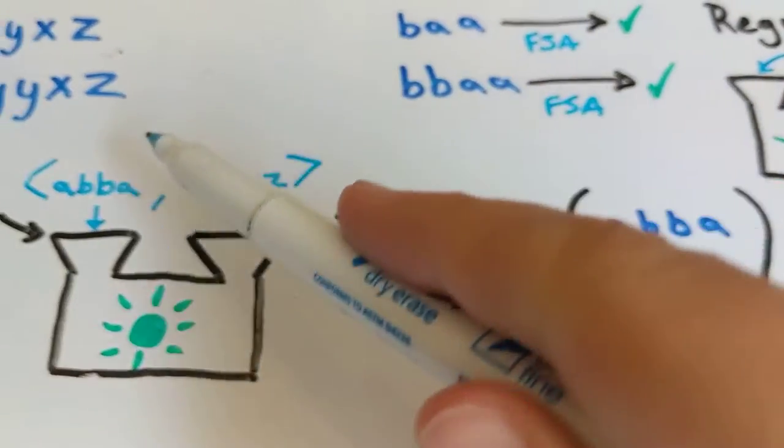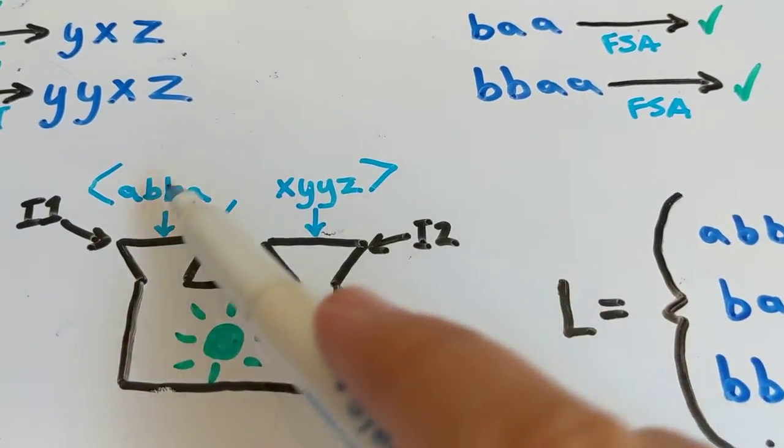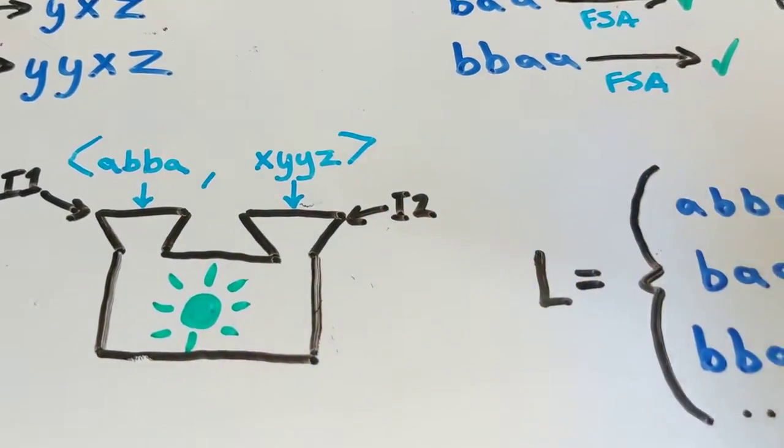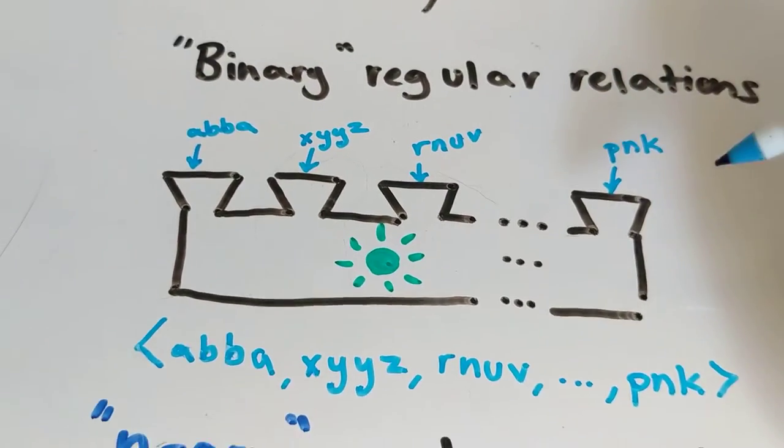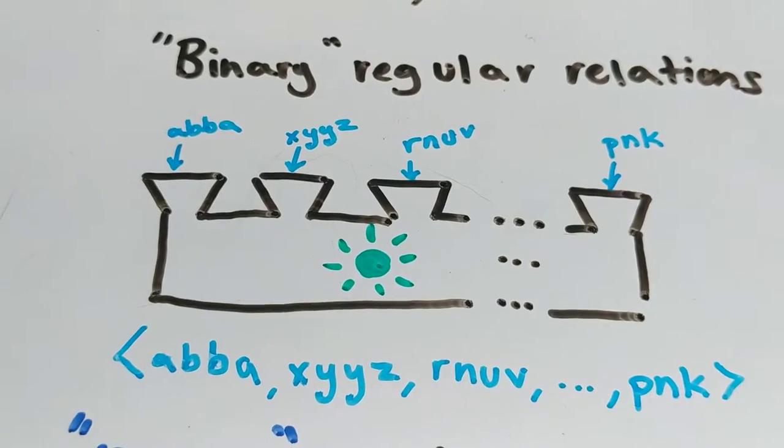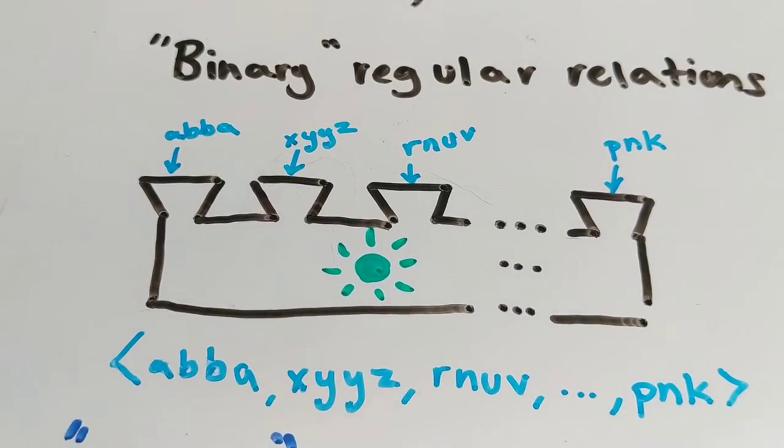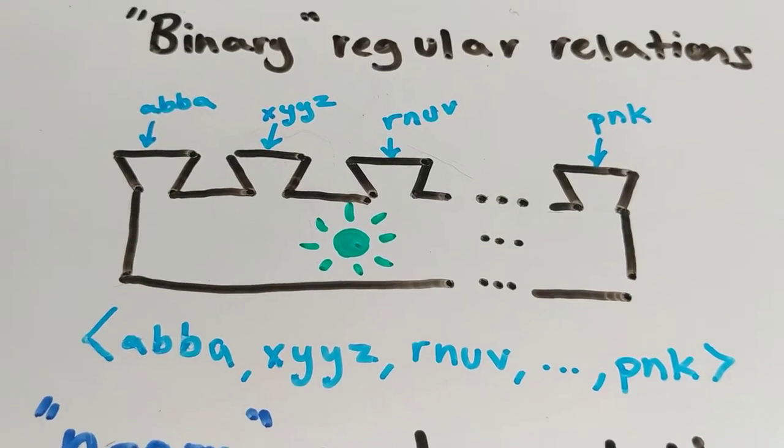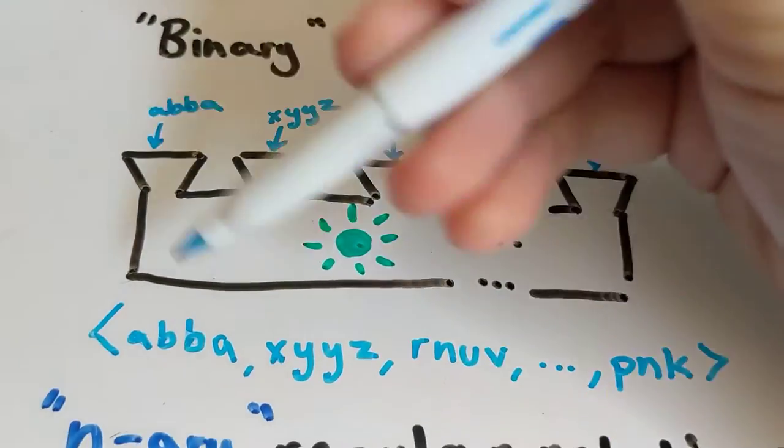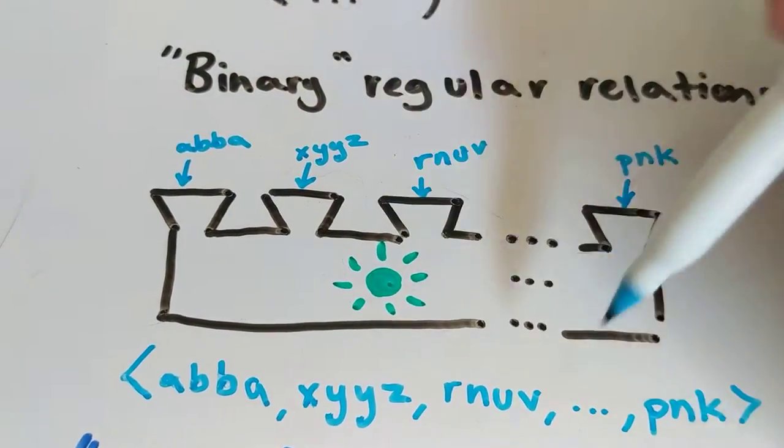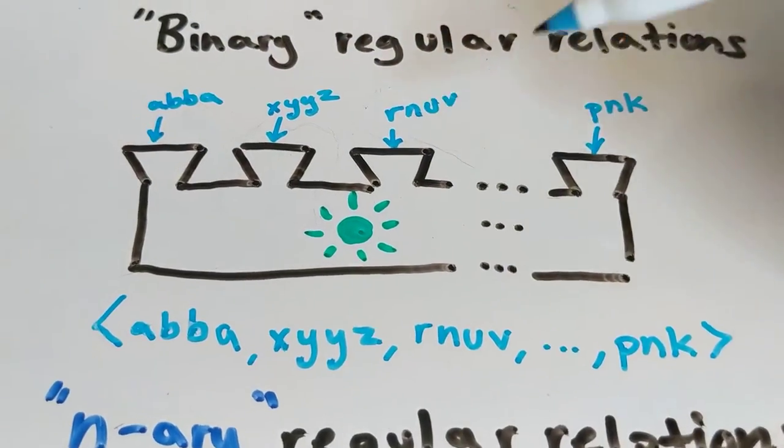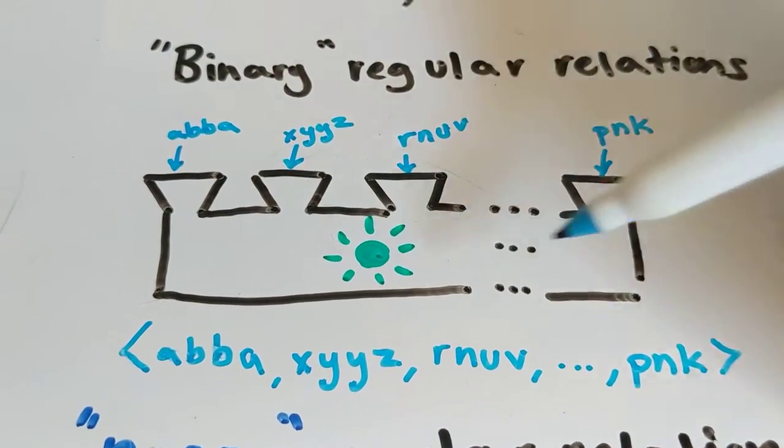What a machine like this generates is a single ordered pair. This is called a binary regular relation, binary because it's a single ordered pair, two things. But you can also as it turns out create machines that accept lots of different strings and says are they all related by some regular relation.